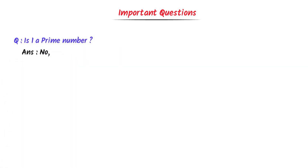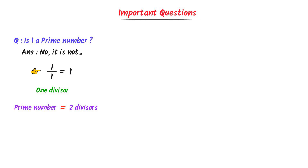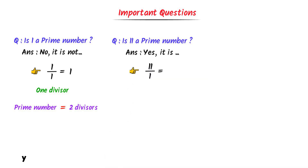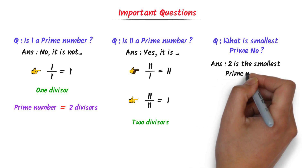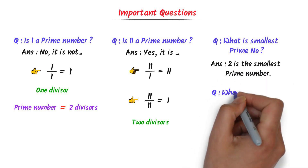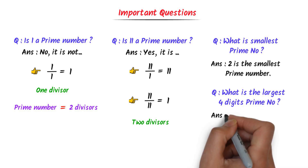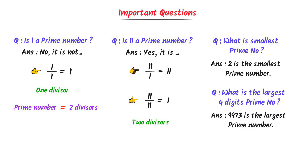Now let me teach you some important questions about prime numbers. Is 1 a prime number? The answer is no — 1 is not a prime number, because we can only divide 1 by 1. It has only 1 divisor, and every prime number must have exactly 2 divisors. Secondly, is 11 a prime number? Yes, 11 is a prime number — we can divide 11 by 1 and by 11, giving it exactly 2 divisors. Thirdly, what is the smallest prime number? The answer is 2. Fourthly, what is the largest 4-digit prime number? The answer is 9973.